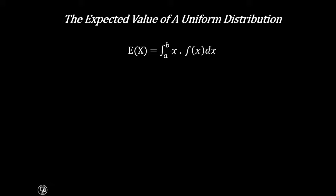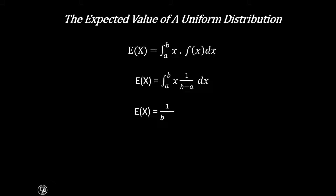Here now we put the real value of f of x, and we have the integral from a to b of x multiplied by 1 over b minus a, dx. So this is x multiplied by 1 over b minus a, whereby f of x equals 1 over b minus a. Since 1 over b minus a is a constant, we bring it out of the integration, giving us 1 over b minus a times the integral from a to b of x dx.